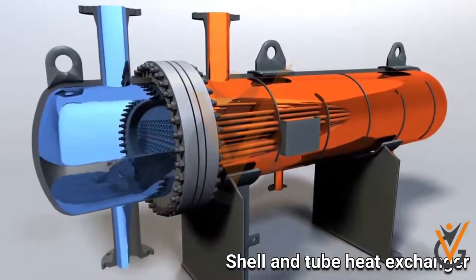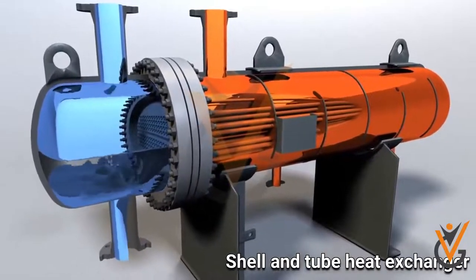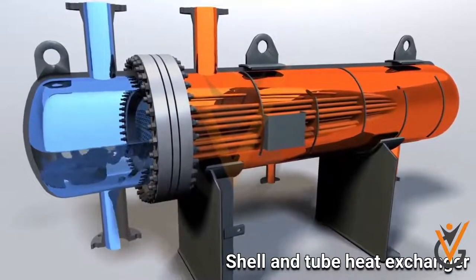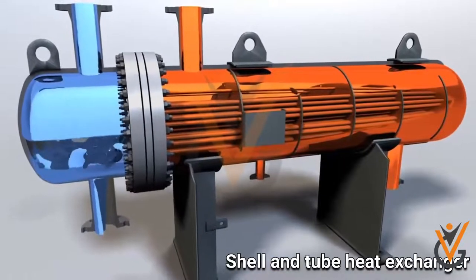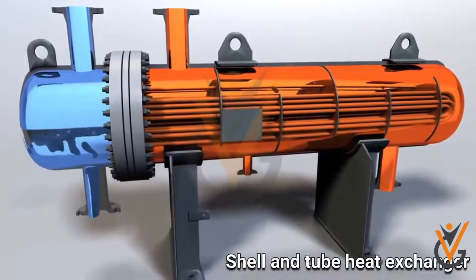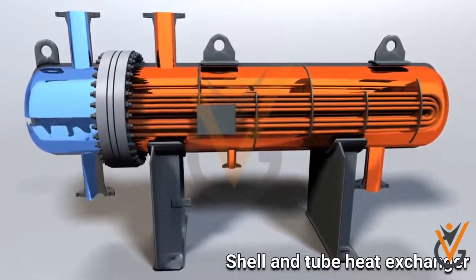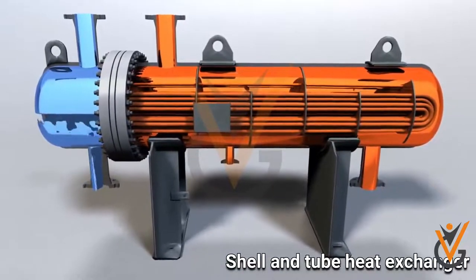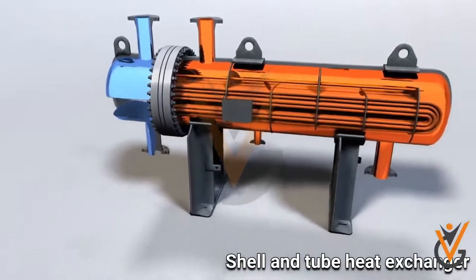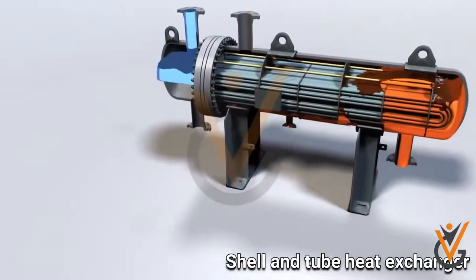The tubes are sealed into the tube plate at either end and provide a passage for the cooling liquid. The sea water is in contact with the inside of the tubes and the water boxes at the cooler ends. The oil being cooled is in contact with the outside of the tubes and the shell of the cooler.